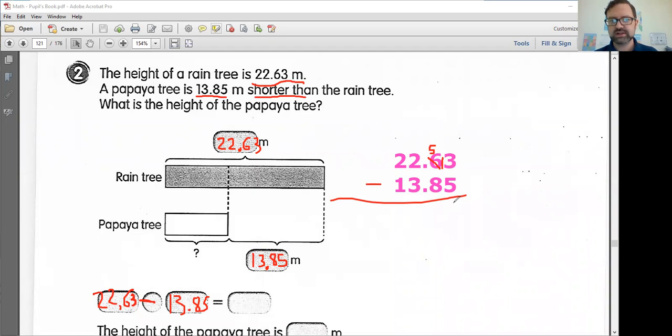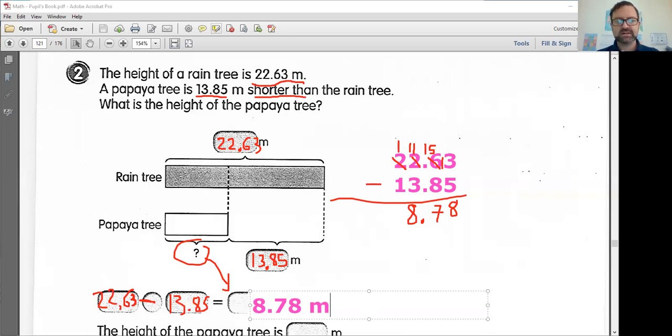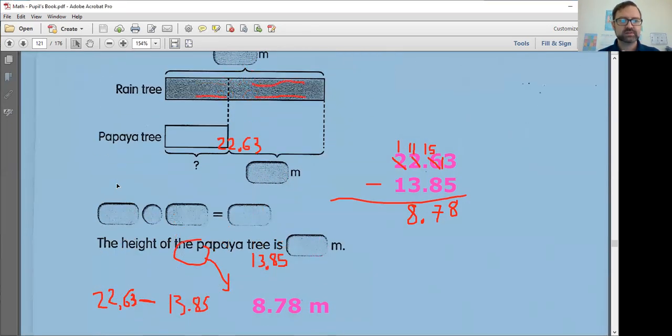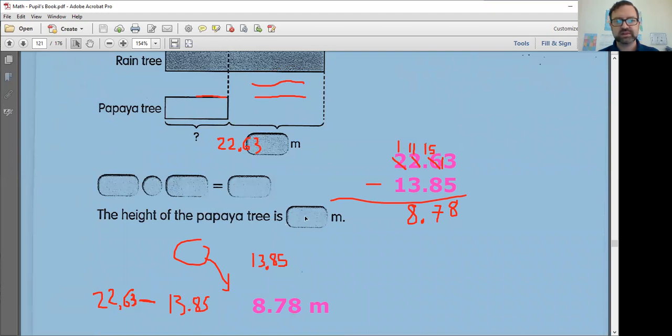13 minus five is eight. Now I've got another one where I need to borrow. This becomes 15. 15 minus eight is seven. Do not forget your decimal point. Got to borrow again. This becomes a one. And this will become 11. 11 minus three is eight. And then finally one minus one is zero. So, the height of the rain tree. I'm sorry, the height of the papaya tree. This is our question mark here, which is our answer is 8.78 meters. And once again, make sure you write it here. The height of the papaya tree is 8.78 meters.